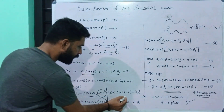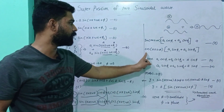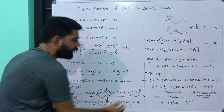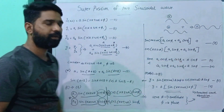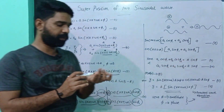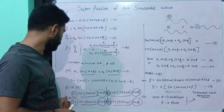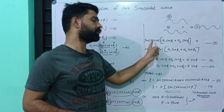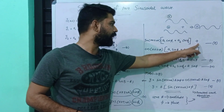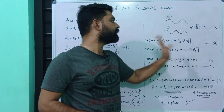cos(kx ± ωt) is a common term. So we factor cos(kx ± ωt) out. The coefficient becomes A1 sin φ1 plus A2 sin φ2. So y is equal to sin(kx ± ωt) times (A1 cos φ1 + A2 cos φ2) plus cos(kx ± ωt) times (A1 sin φ1 + A2 sin φ2).